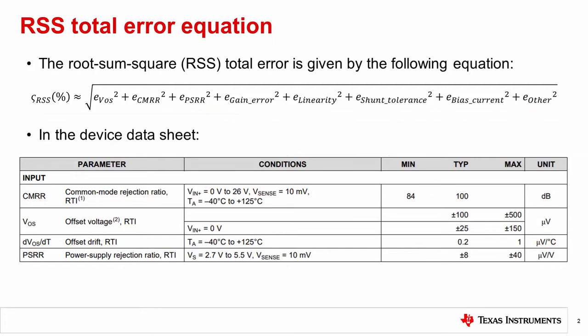The next few topics will focus on input referred offset error sources: input offset voltage (VOS), common mode rejection ratio (CMRR), or power supply rejection ratio (PSRR). All three of these errors are given in the electrical characteristics table on a device data sheet, as shown here. The rest of this video focuses on VOS, as well as VOS drift. VOS drift describes the change of VOS with ambient temperature.